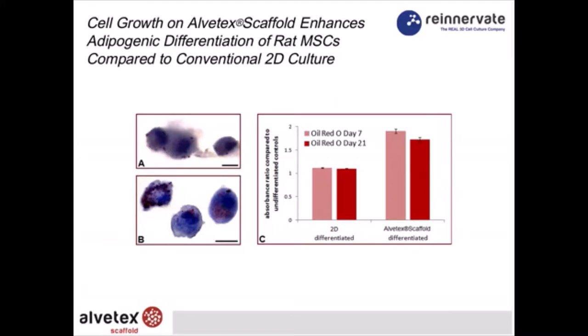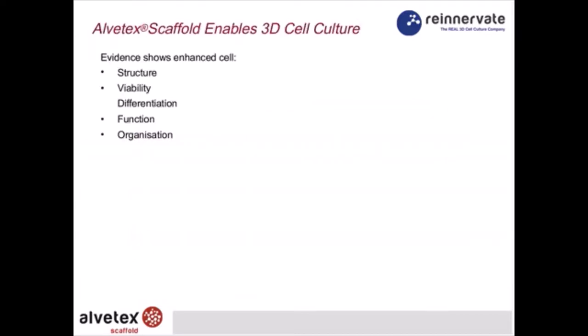We also have flow cytometry data of cells isolated from Alvitex and stained with Nile Red, again showing an increase in expression. The evidence I've shown leads to the conclusion that cell structure is enhanced in 3D culture, viability is greater, differentiation is enhanced, and gain of function and organization can be improved. Go to the website for examples in other tissue systems as well.